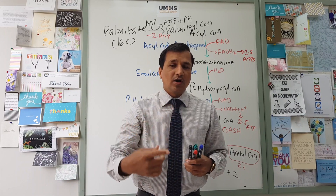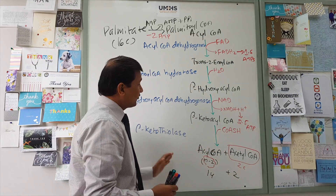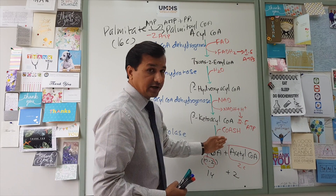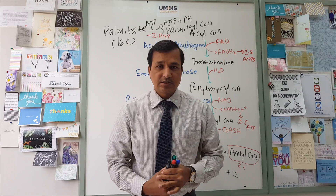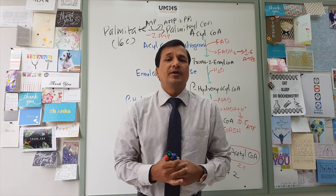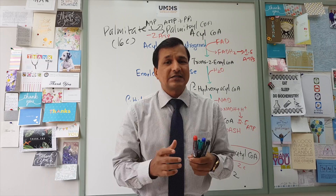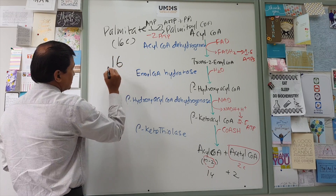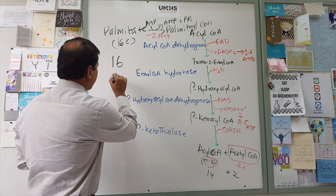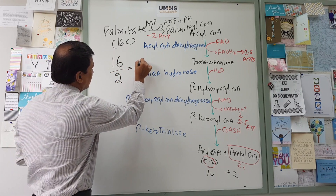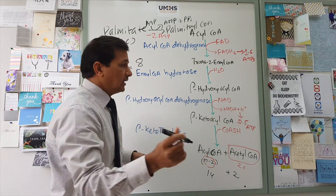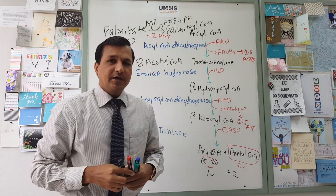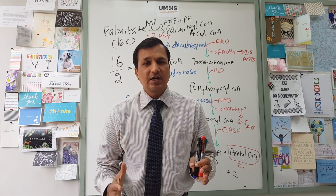This 14-carbon molecule gets back into the first reaction, and the process continues until you have four carbons left. In the last spiral you get the final acetyl-CoAs. In each spiral you also get FADH2 and NADH. Now let us calculate how many ATPs we get from palmitoyl-CoA with 16 carbons. Simply divide the number of carbons by 2: 16 ÷ 2 = 8, so you get 8 acetyl-CoA molecules from a 16-carbon palmitoyl-CoA.